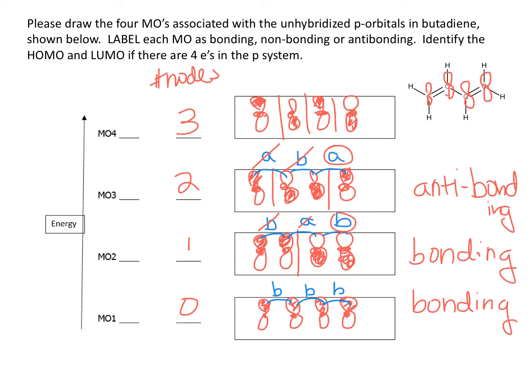As far as the type of orbital that this is, I'm sure you can guess it is all antibonding, because it has one, two, three antibonding interactions that raise the energy of this orbital.